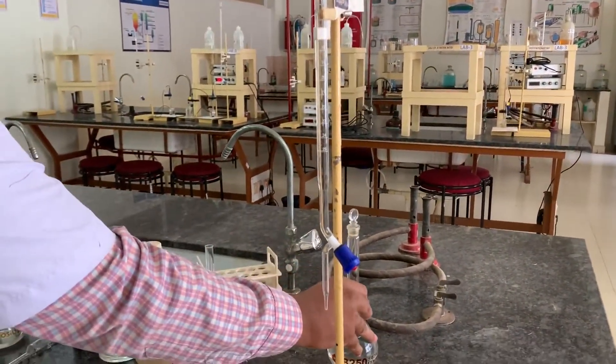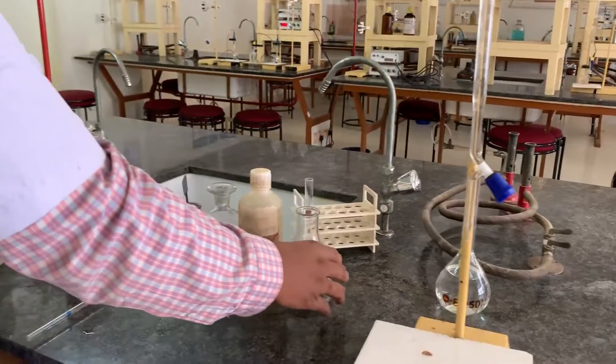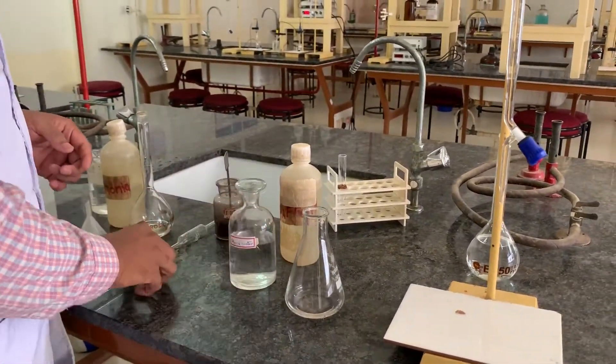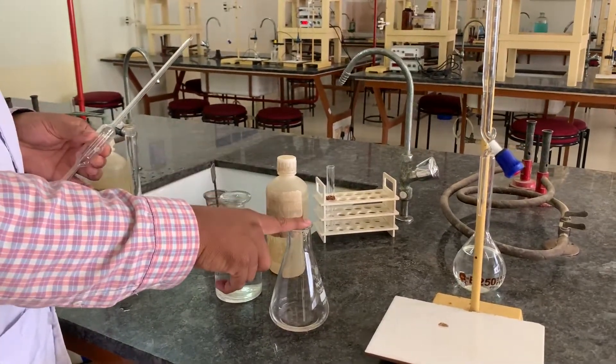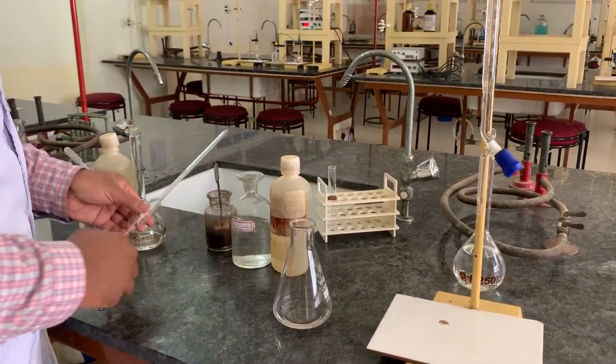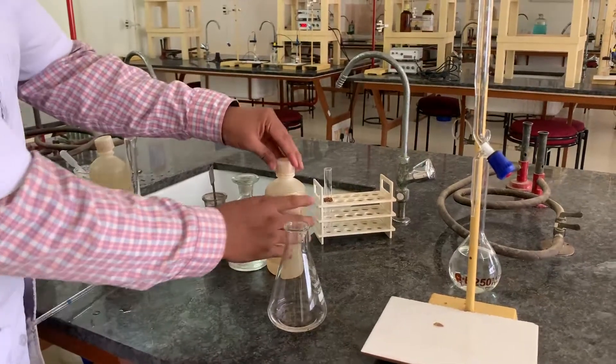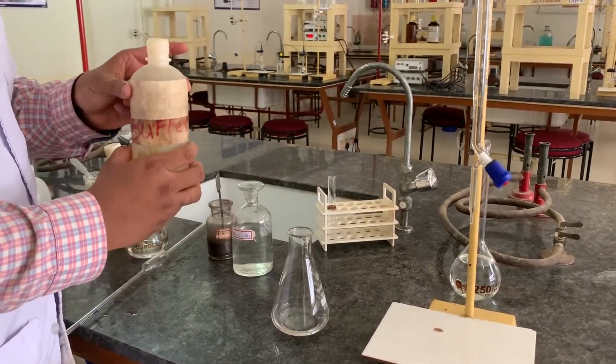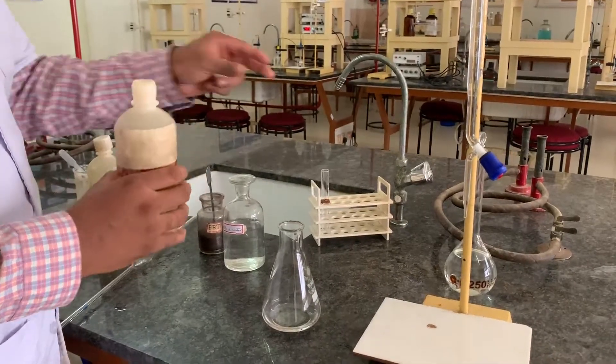Part B is concerned with the titration where we have to pipette out 25 ml of hard water using the pipette. 25 ml of hard water has been taken into the conical flask followed by 5 cm cube of buffer solution. The buffer solution used here is ammonium hydroxide, ammonium chloride buffer.